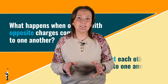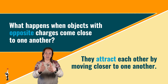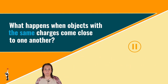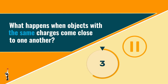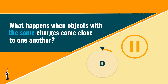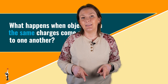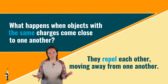For question two, objects with opposite charges attract each other by moving closer to one another. For question three, objects with the same charge repel each other by moving away from one another.